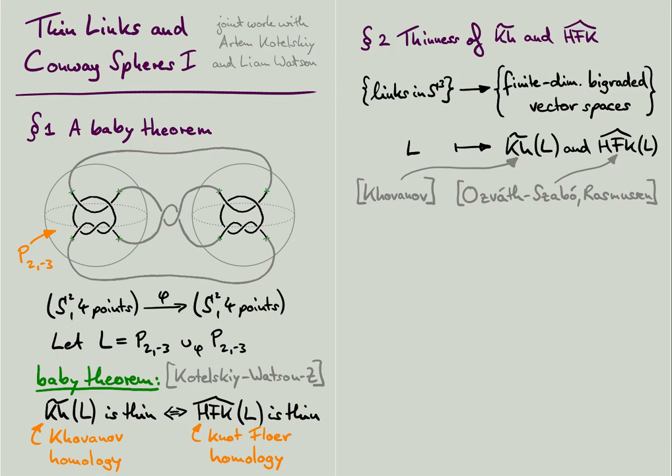Knot-Floer homology, due to Ozsvath and Szabo and independently Jacob Rasmussen, was originally defined analytically, although by now there also exist purely algebraic reformulations.